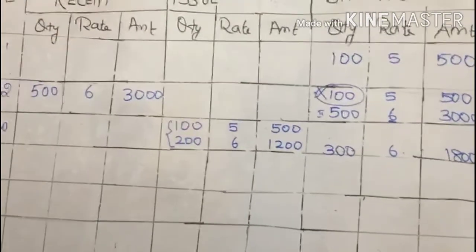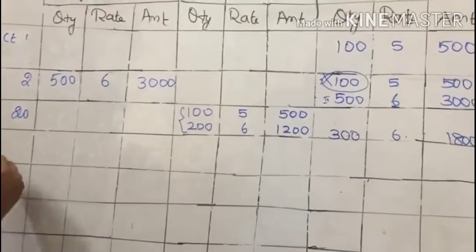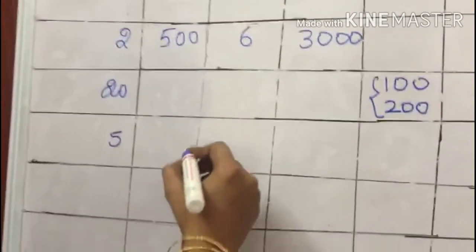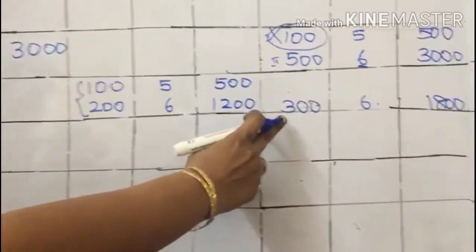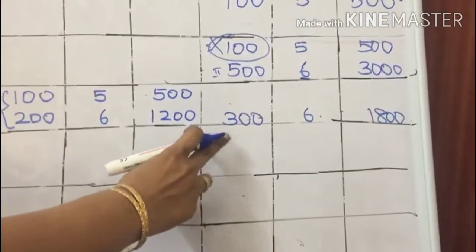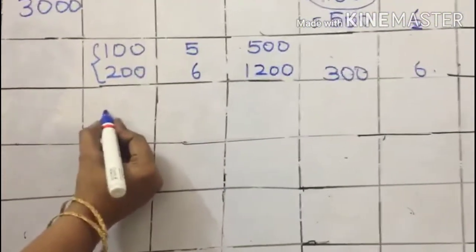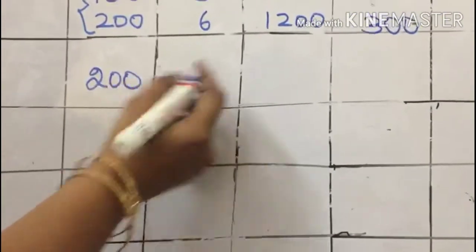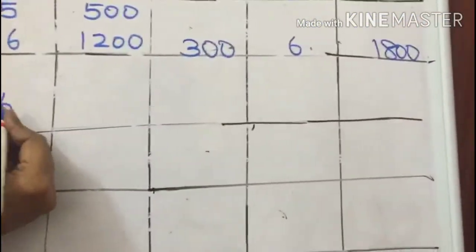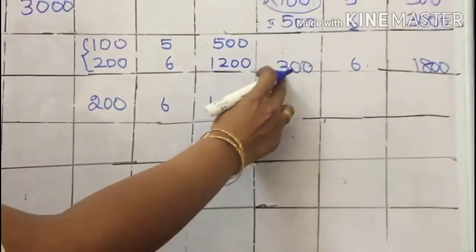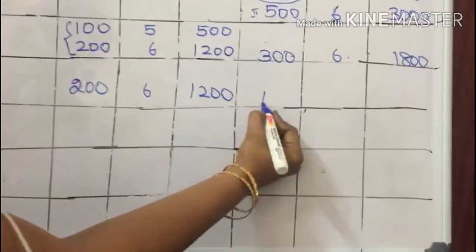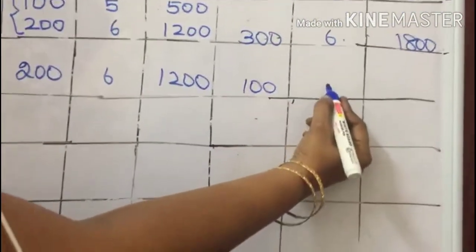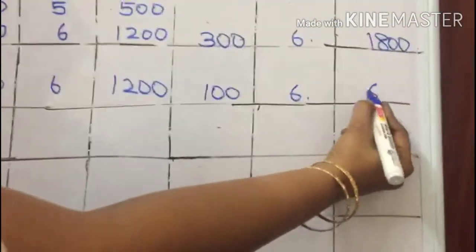On November 5, there is another issue of 200 units. We have only one bag remaining with 300 units. So we issue 200 at the rate of 6, giving 1200. The remaining balance is 100 units at the rate of 6, which is 600.